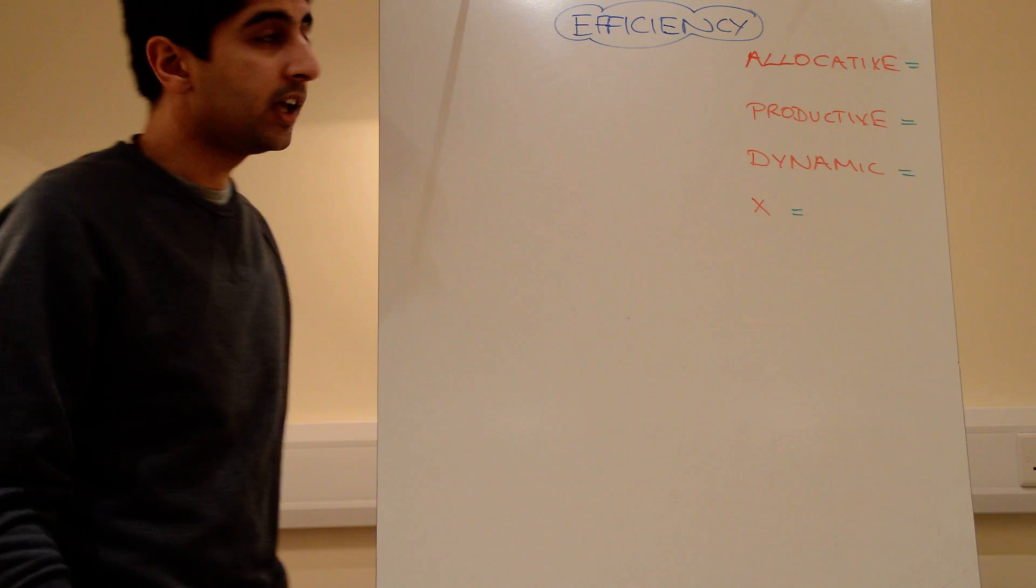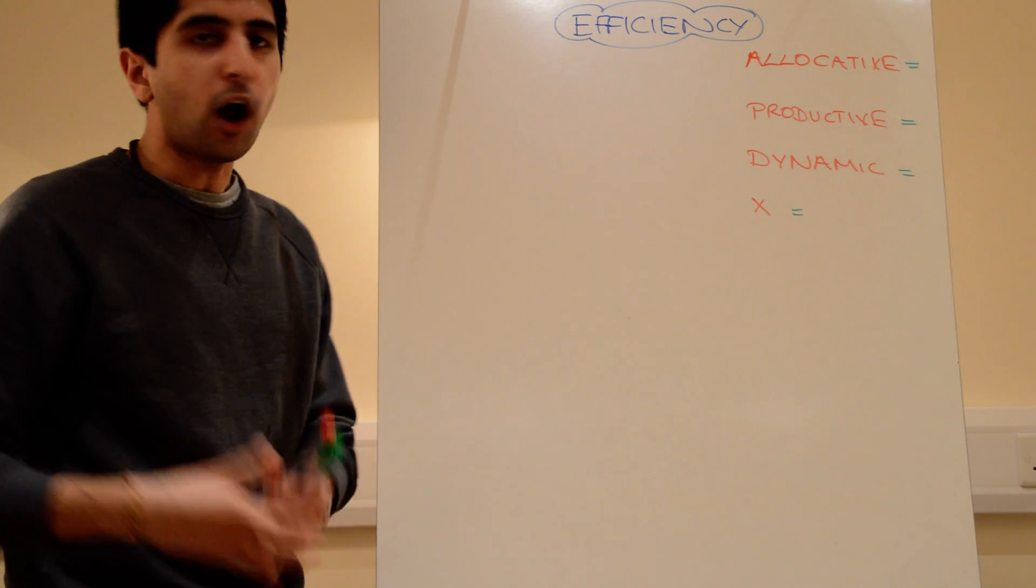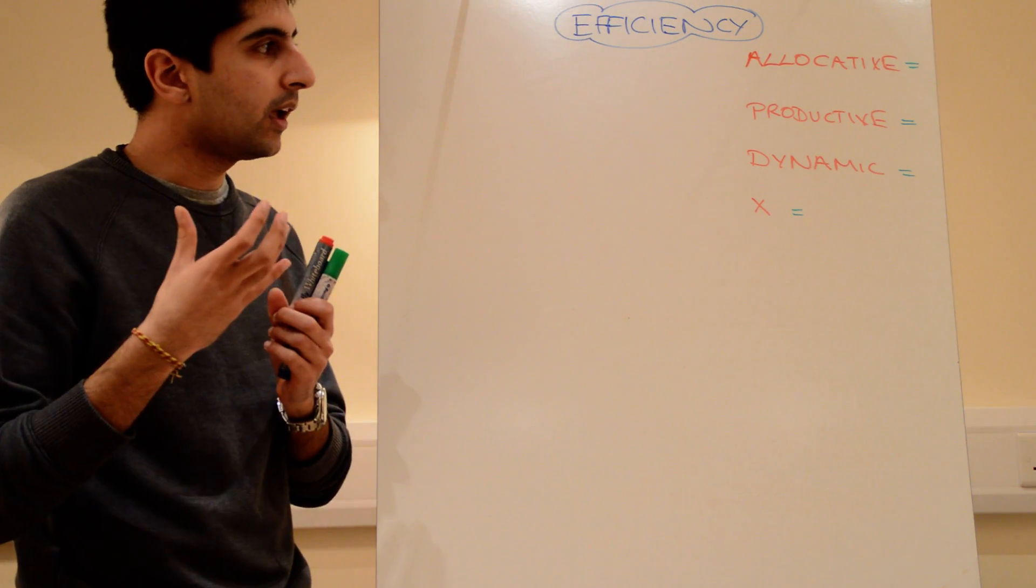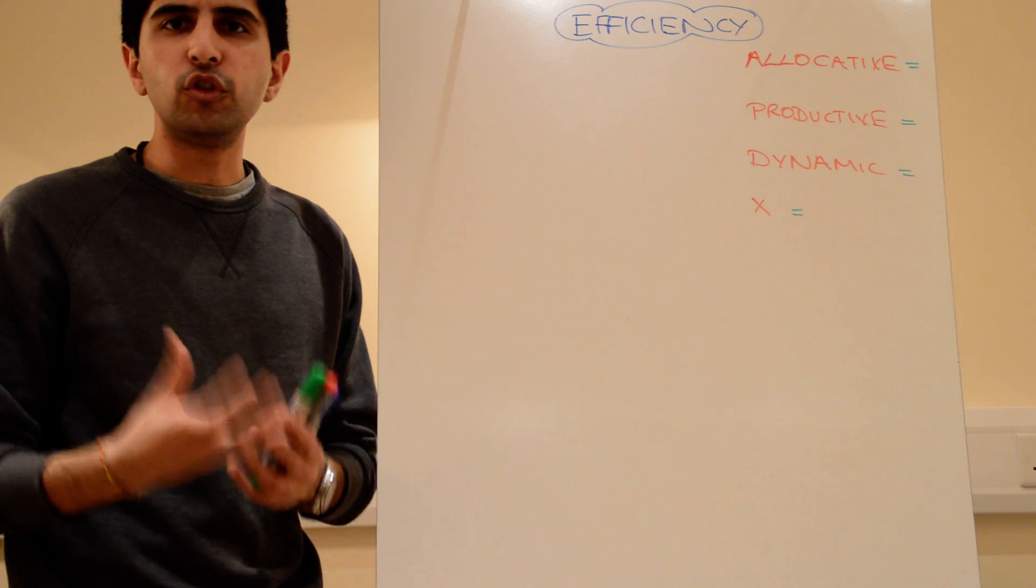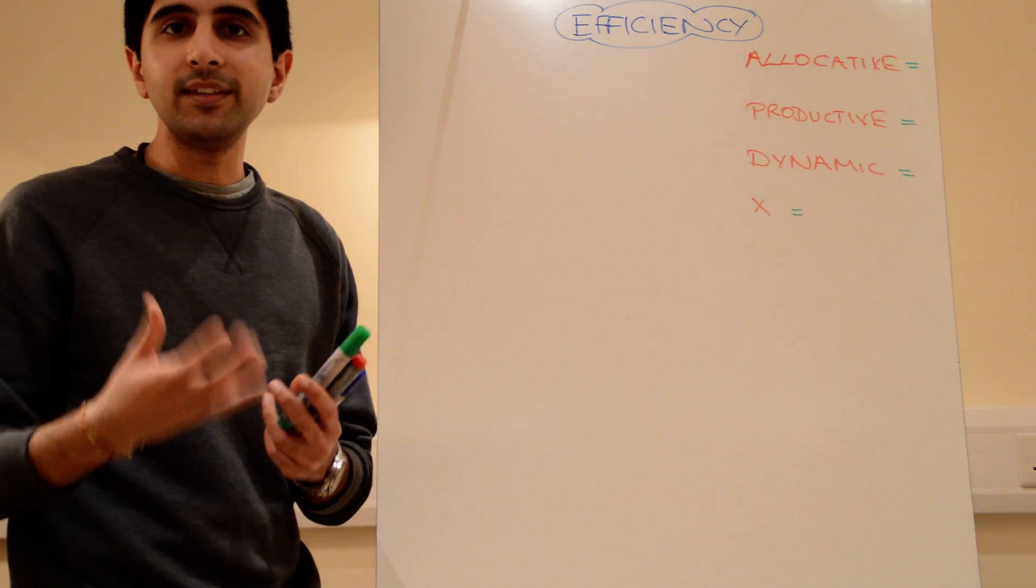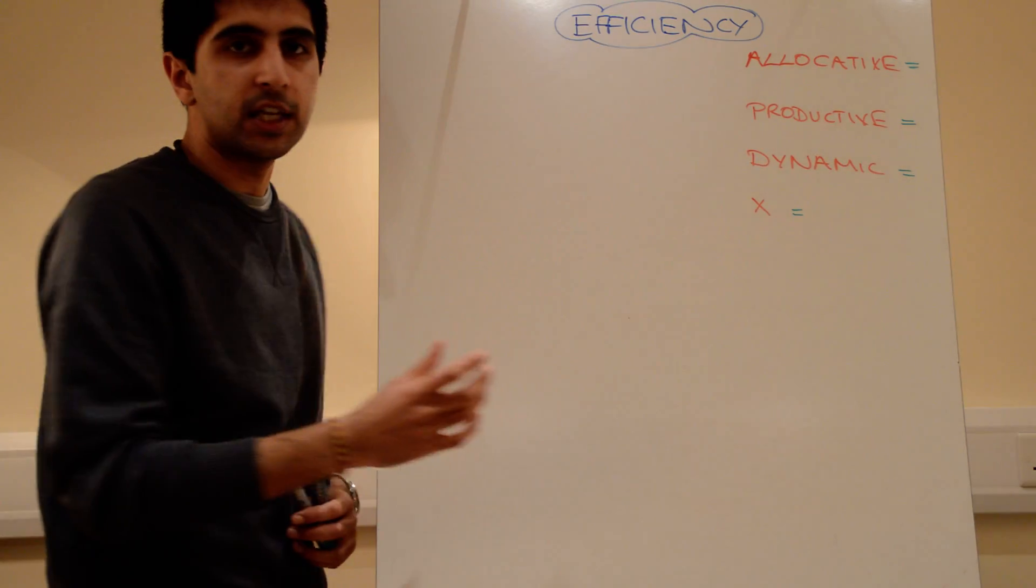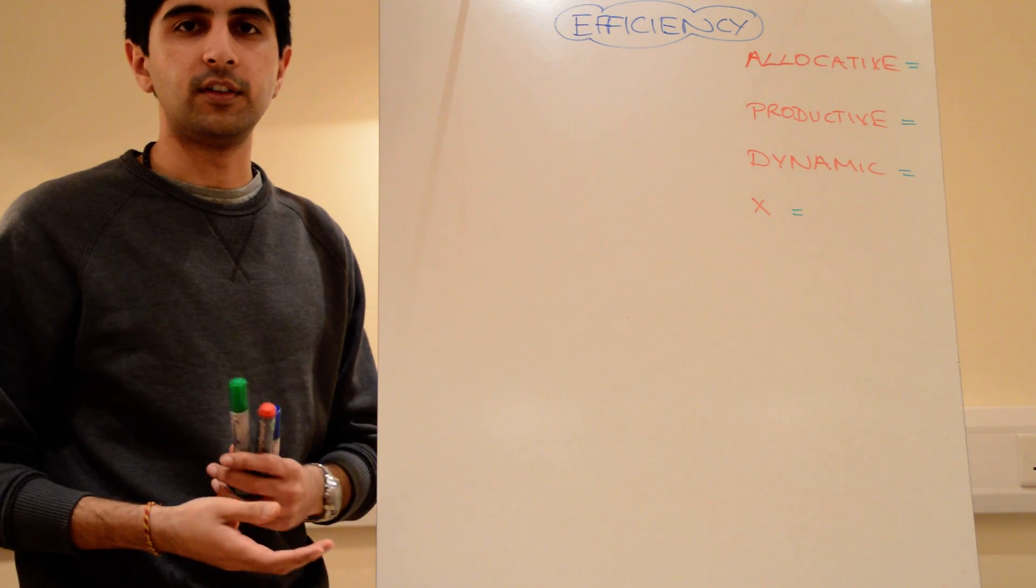Allocative efficiency. This is the efficiency that looks at the consumer mainly. Are resources being allocated at a point where consumer satisfaction is maximized, where consumers are demanding a product? The way we know in basic microeconomics whether that's being achieved is if demand equals supply. As long as demand equals supply there is allocative efficiency.